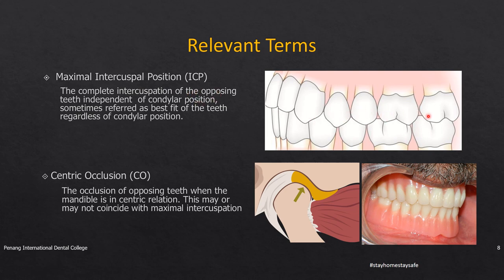Maximum intercuspation is the complete intercuspation of the opposing teeth independent of the condylar position — sometimes referred to as the best fit of the teeth regardless of condylar position. This is usually seen in the natural dentition. In complete dentures, we make sure that centric relation and centric occlusion coincide. Centric occlusion is the occlusion of the opposing teeth when the mandible is in the centric relationship.